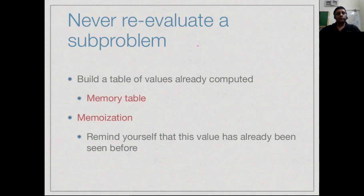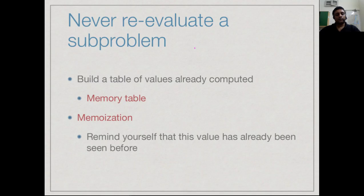One way to get around this is to make sure that you never re-evaluate a subproblem. You build up a table — sometimes called a memo table — which keeps track of every value for which you have computed the function before. It is just a lookup: in Java it could be a hash map, in Python it could be a dictionary. Every time you call F on a value x, you store the pair (x, f(x)) in this table so you can look it up and see if it has already been computed. This is called memoization.